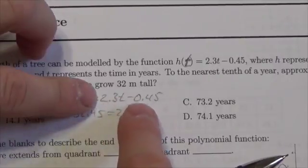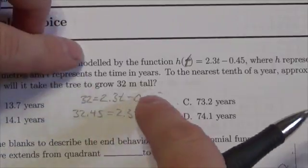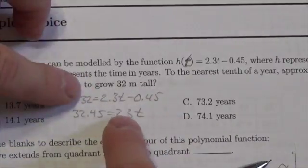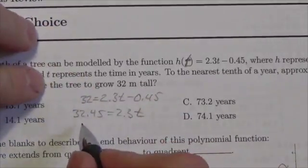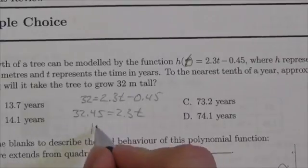One of them has a t in it, the other one doesn't, so what I want to do is isolate the one that has the t in it. So I'm gonna add that 0.45 to the other side and now I'm gonna divide by 2.3. When you take 32.45 and divide it by 2.3, I'm just doing that in the calculator off the side here, you get 14.1 equals t.